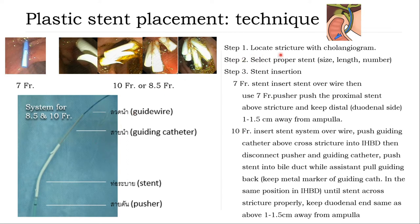Step 1: Locate the stricture with cholangiogram. Step 2: Properly select stent. Then safely insert the stent. If 7 French, just put the stent and pusher. Keep the distal end 1 to 1.5 cm away from the ampulla. If 10 French stent, prepare the delivery system with guiding catheter and pusher, and keep the stent 1 to 1.5 cm from the ampulla.